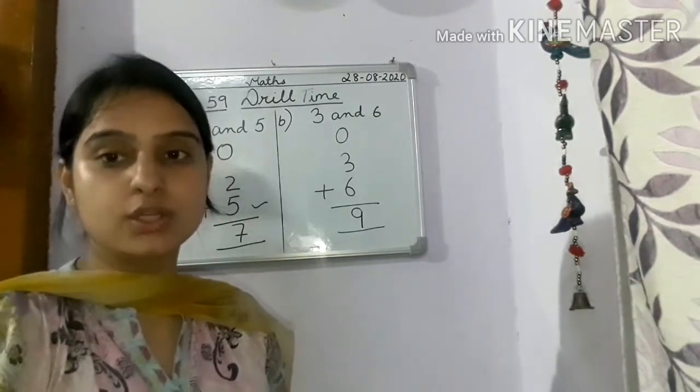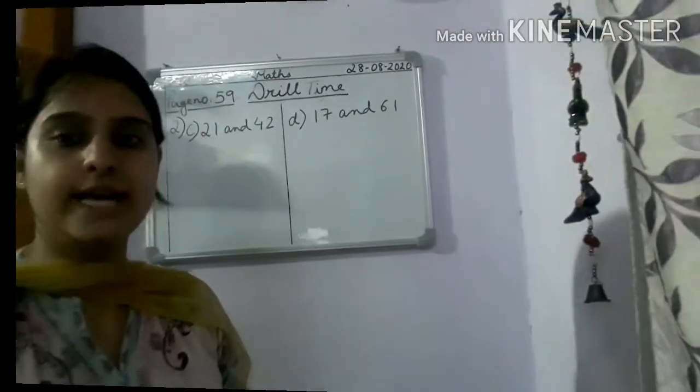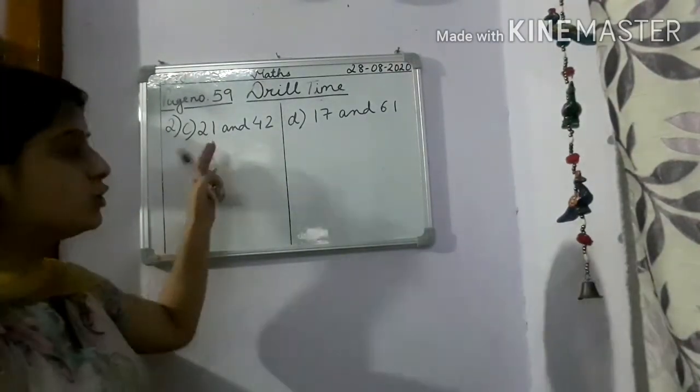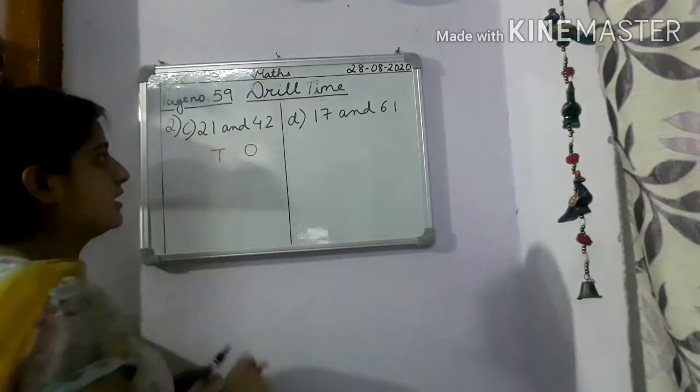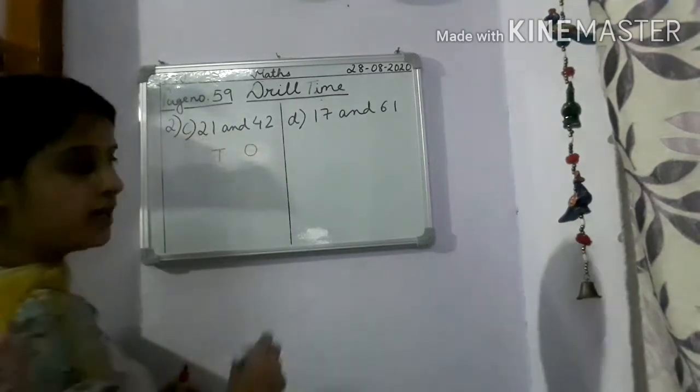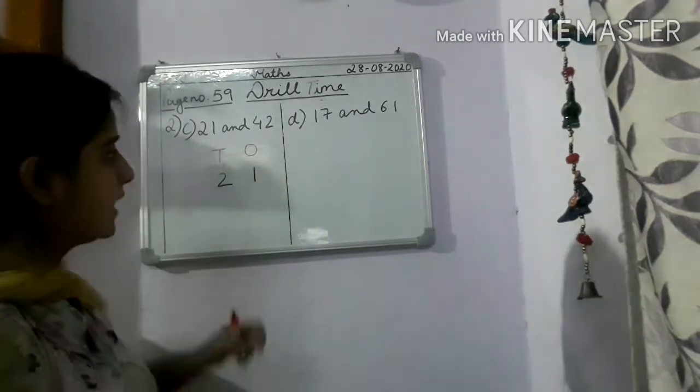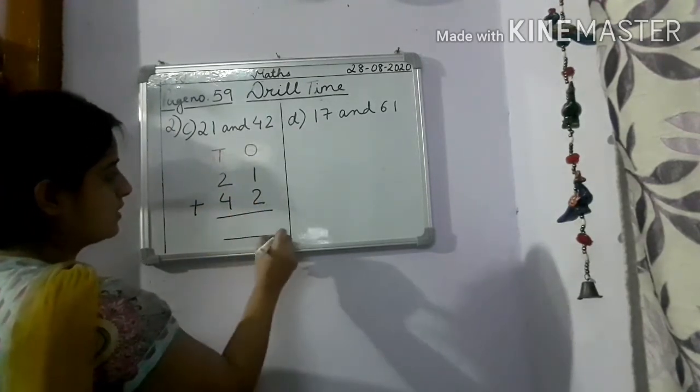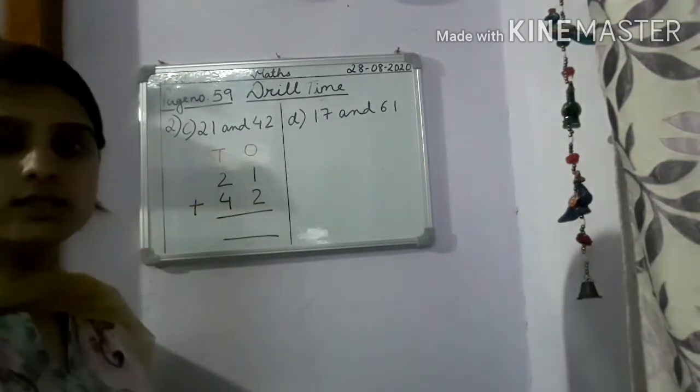Then next, we will do two digit number, that is 21 and 42. So let's start. So next children, add 21 and 42 vertically. So this is your two digit number, isn't it? So we will put two places, ones, tens. Now we are going to arrange this vertically. First we will arrange the number 21. 2 will come in tens place, 1 will come in one's place. Plus 42. We always start adding from which place? One's place. So 1 plus 2 is what? 3.